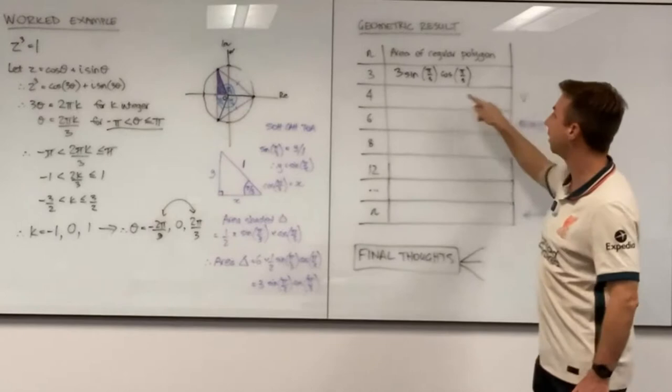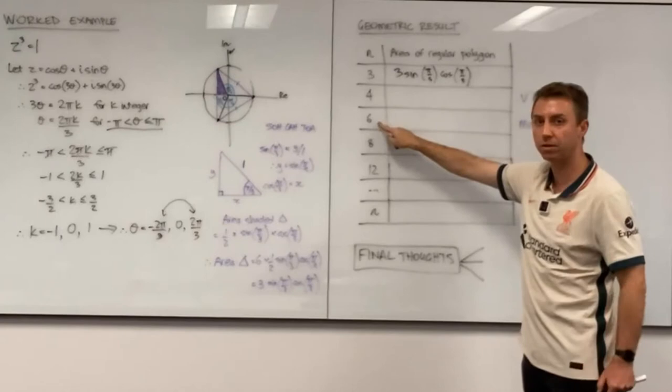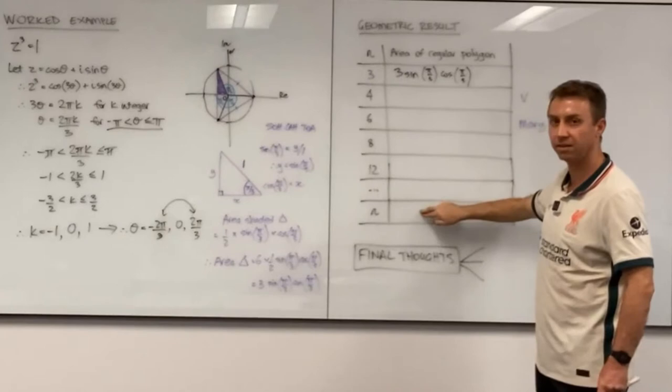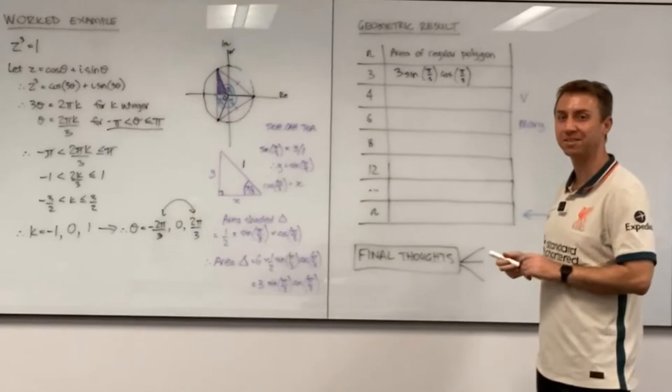Now if there were more students here I'd give you each a row each. What we'll do is V, how about you do z^4 = 1, and Mary you do z^6 = 1? And we'll see if that gives us enough to then start to generalize. So have a go and then I'll come around and help and we'll reconvene.